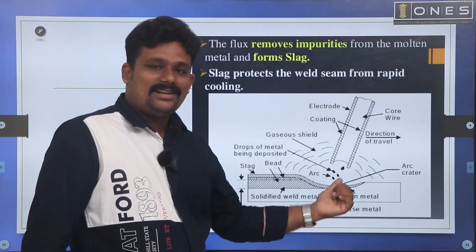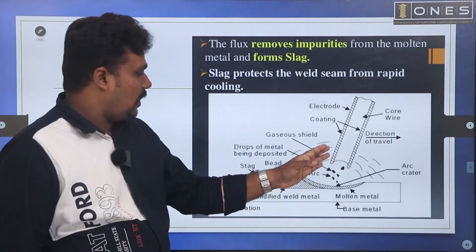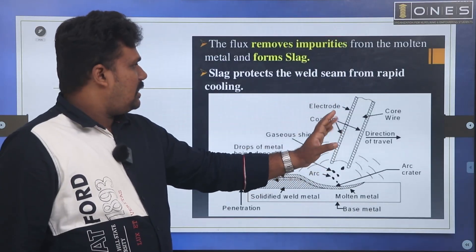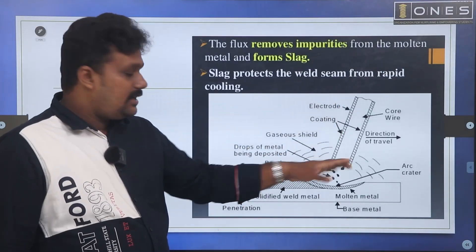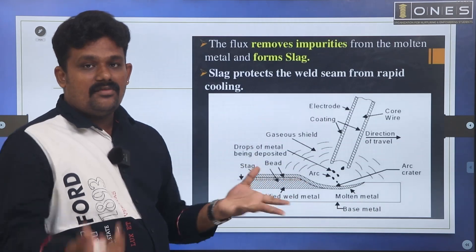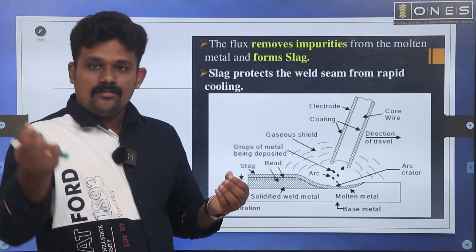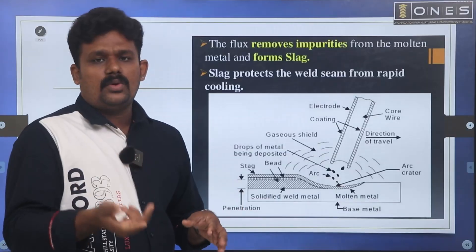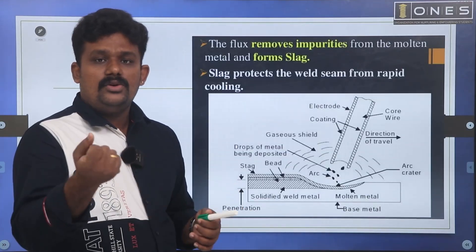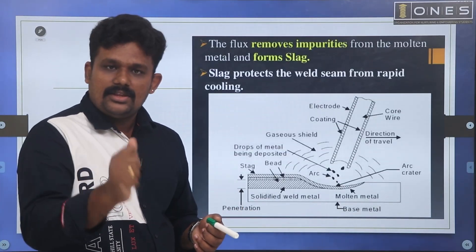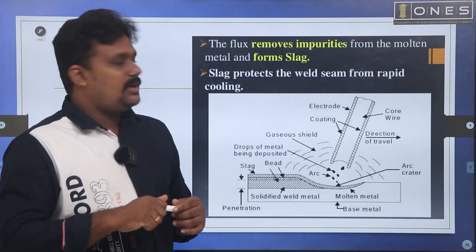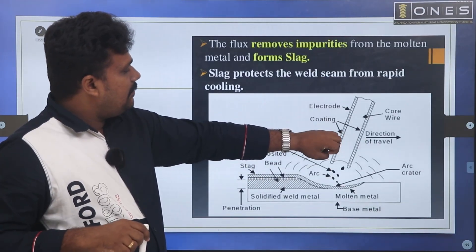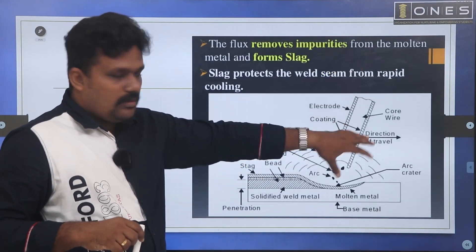The components include the electrode, flux, which melts into slag, oxidation protection, a trap, and a chipping hammer.